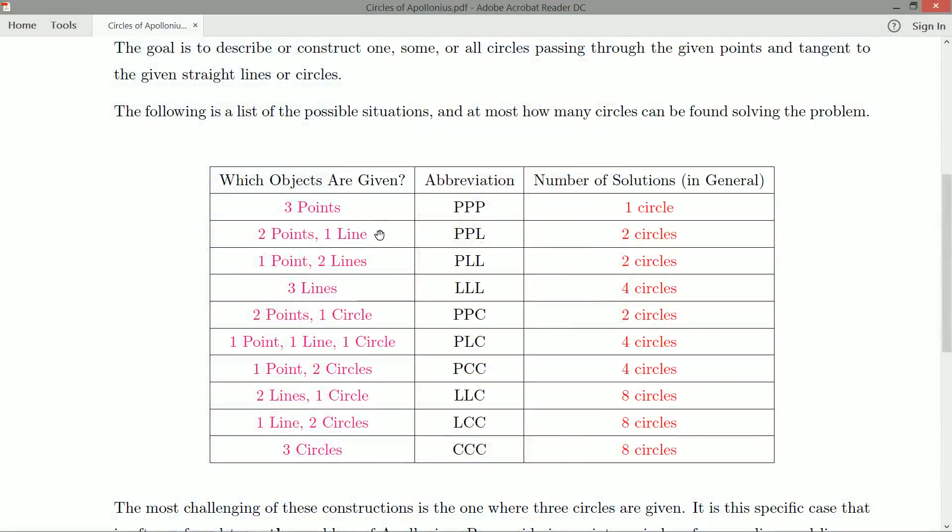But there are others, and each of them come with their own number of solutions. So you could be given two points and one line. We tend to abbreviate that by PPL. Some sources will cite the more complex objects first, so they might write it as LPP. I prefer my points first, then my lines, then my circles. That's how I was originally taught this problem. But if we're given two points and one line, in general, we can find two circles. Two different circles that are tangent to this line and pass through the given points. And then there's one point and two lines, and that also has two circles in general for their solutions.